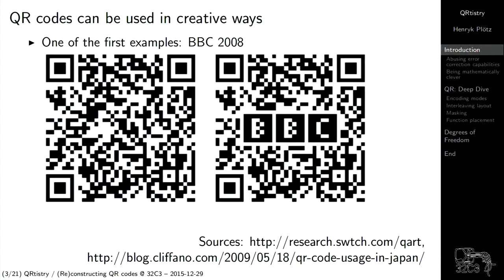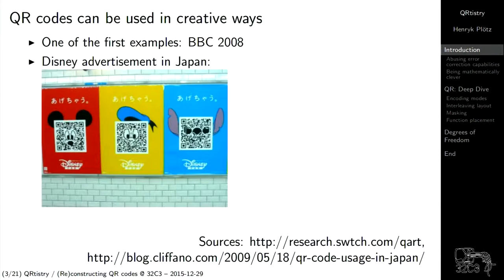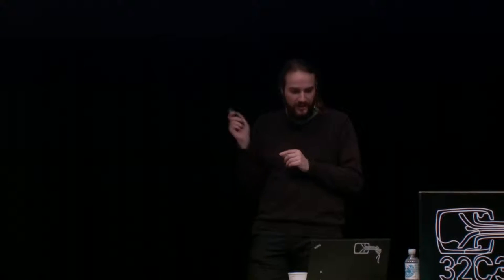Dieses Beispiel habe ich von einem ähnlichen Projekt, aber das hat nicht so ein breites Spektrum wie mein Vortrag. In Japan wurden QR-Codes schon seit einer ganzen Weile benutzt. Diese Disney-Werbungen haben auch einen sehr gut lesbaren QR-Code, der so aussieht, als ob möglicherweise einige Disney-Charaktere mit drin sind, aber die sind nicht wirklich im Barcode.